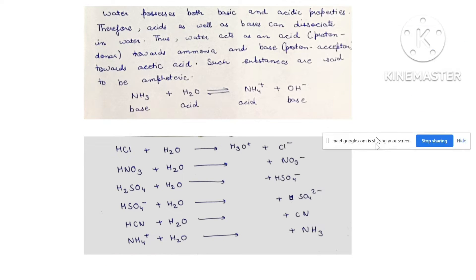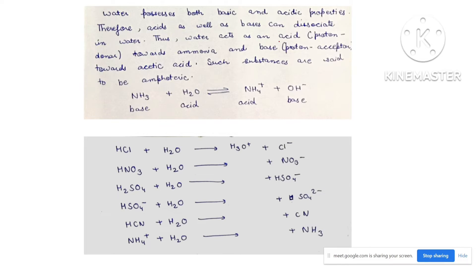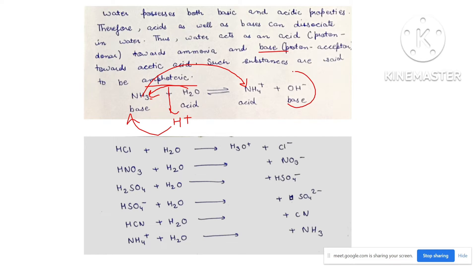Water possesses both properties — it can act as both an acid and a base. Such substances which act as both acid and base are known as amphoteric compounds. For example, with ammonia as the base, water donates an H positive ion which ammonia accepts, converting into NH4 positive, while the OH negative remains. So after losing the H positive, an acid forms its conjugate base. And after a base accepts H positive, it forms the conjugate acid.